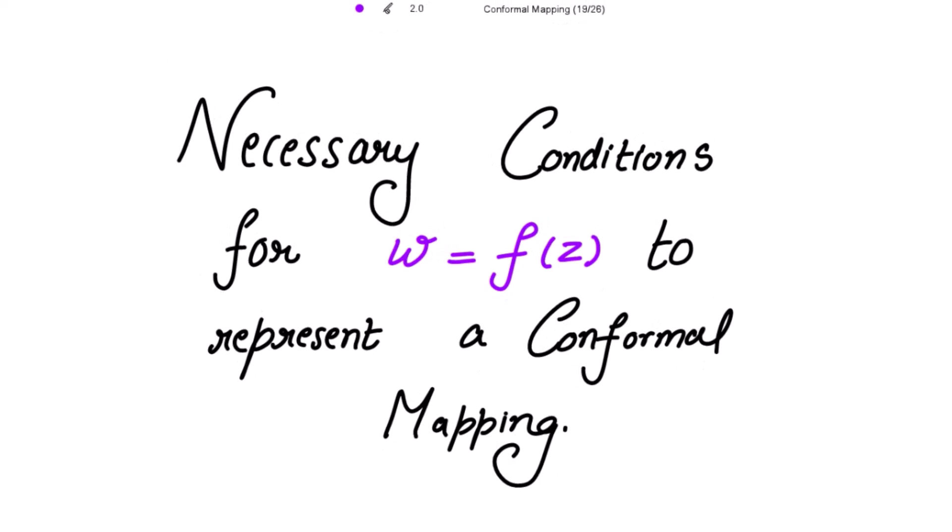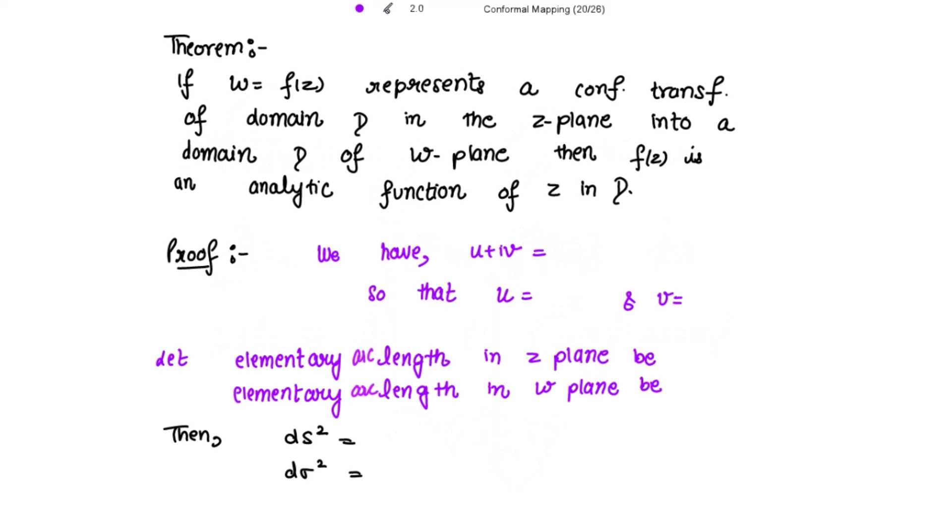Necessary conditions for w equal to f(z) to represent a conformal mapping. The theorem is: if w equal to f(z) represents a conformal transformation of domain D in the z-plane into domain D of the w-plane, then f(z) is an analytic function of z in D. We have to prove that f(z) is an analytic function, and we have to reach the Cauchy-Riemann equations for that.